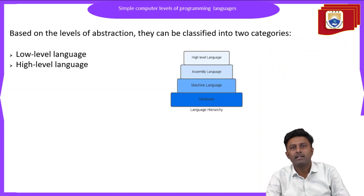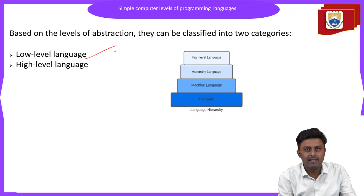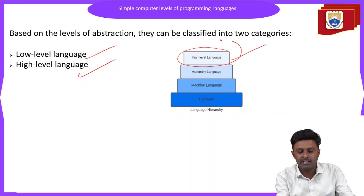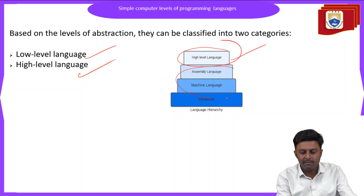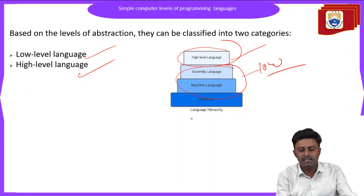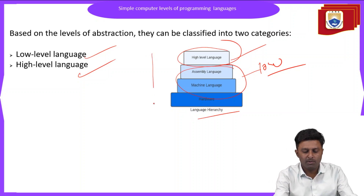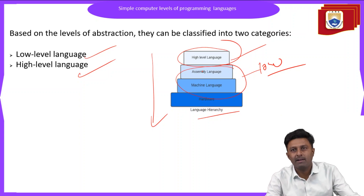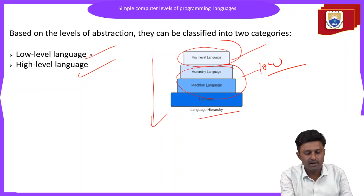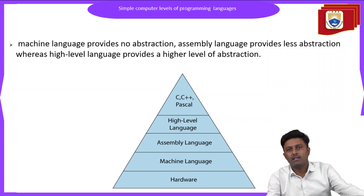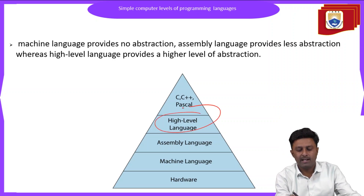Now we will see what are the different types of programming languages available. Programming languages are classified into two main categories: low level language and high level language, and this figure shows the same thing. At the top of the hierarchy there is a high level language. Next to that is the assembly language and machine language, which come under the low level language. As we go from the top to the bottom of the hierarchy, the first level of abstraction is a high level language, then the two types of low level languages.